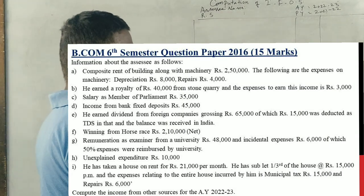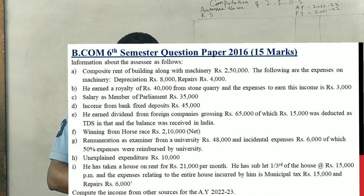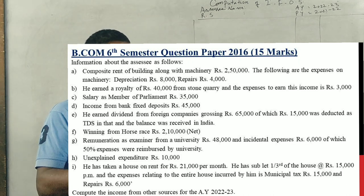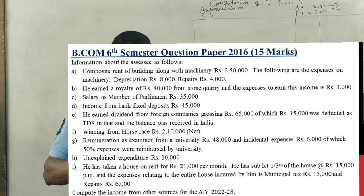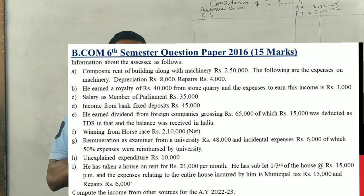Students, this is Income Tax - Income from Other Sources 2016, a 15-mark question. The assessee information: composite rent of building with machinery Rs. 2,50,000. Expenses on machinery include depreciation and repairs. One building is given along with machinery, but only machinery rent is specified, not building rent. When renting machinery, we incur depreciation and repairs expenses.